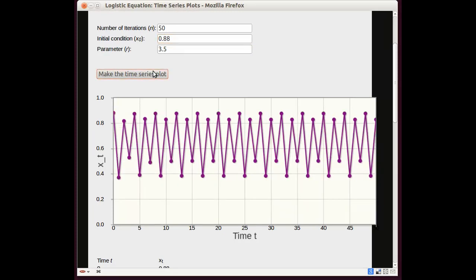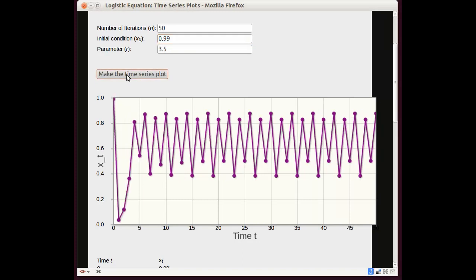Try 0.88. Again, we're still seeing period 4, the same cycle. Let's do the dramatic one, 0.99. Big crash, fast growth. Again, we end up with period 4.